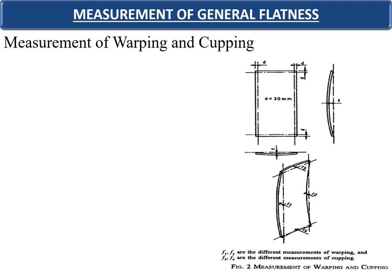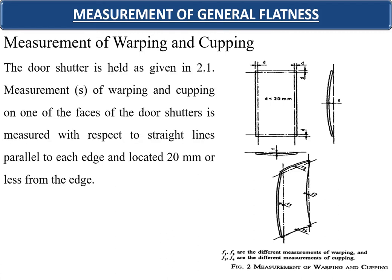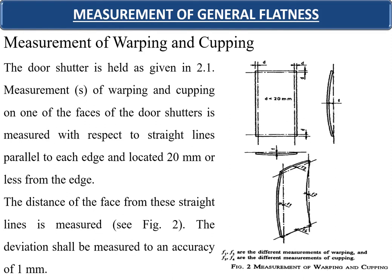Measurement of warping and cupping: the door shutter should not form a cup shape as shown in the figures. One face of the door shutter is measured with respect to straight lines parallel to each edge and located 20 millimeters or less from the edges. The distance of the face from these straight lines is measured, and the deviation shall be recorded to an accuracy of 1 millimeter. All measurements — dimensions, twist, warping, and cupping — are taken 20 millimeters inside from the edges.